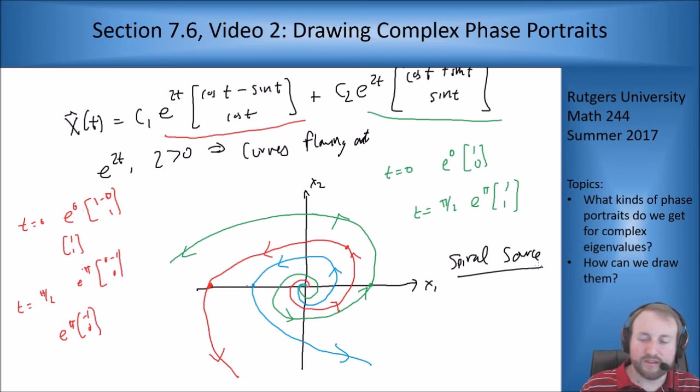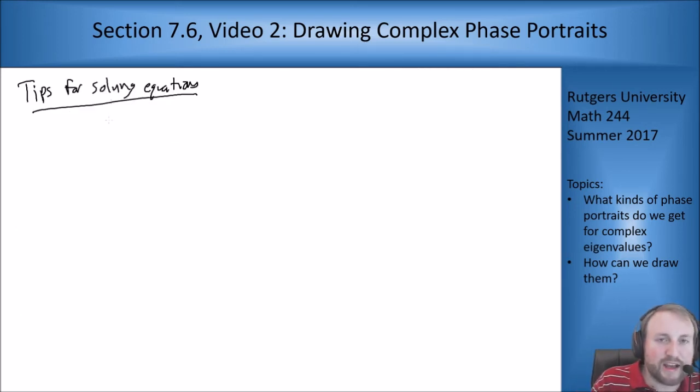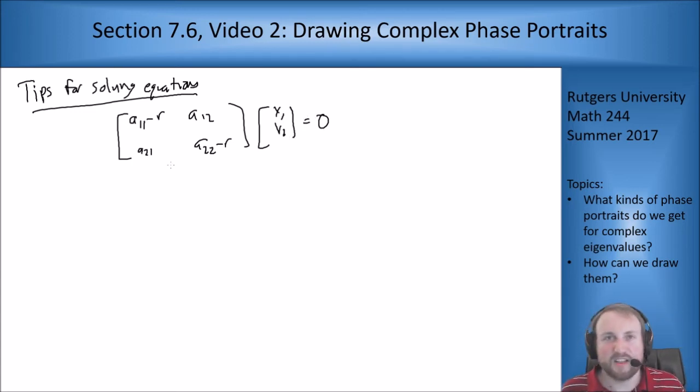All right, so there's drawing phase portraits. Let's now look at some tips for solving these equations. So we do the eigenvector, eigenvalue stuff. You're going to end up solving something like [r - a, -b; -c, r - d] times [x1; x2] equals 0. But r is going to end up being a complex number because you're going to take your characteristic polynomial, find its roots, and get complex numbers. So this is going to end up being complex valued. And what you're going to have to realize is that you're allowed now to multiply by i to simplify your expressions out.